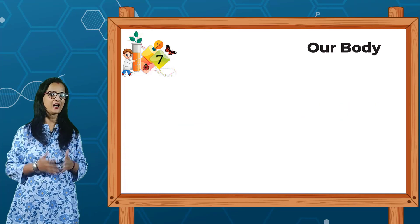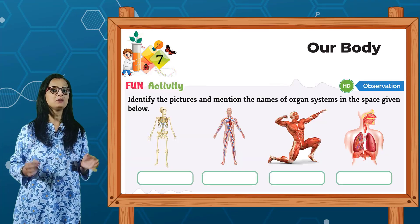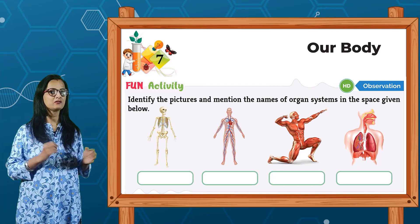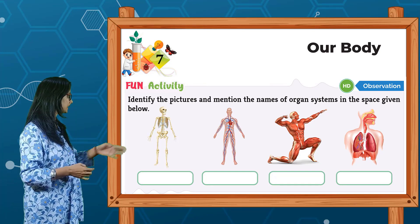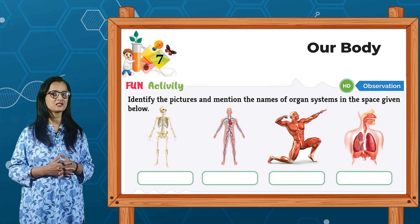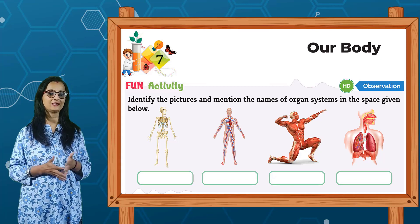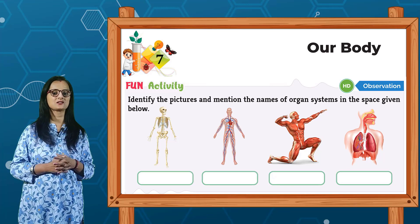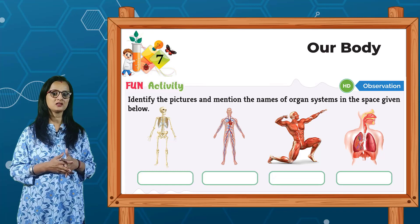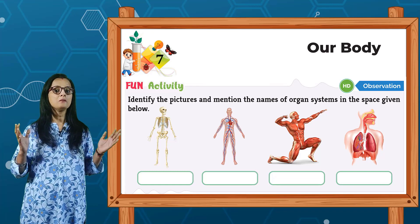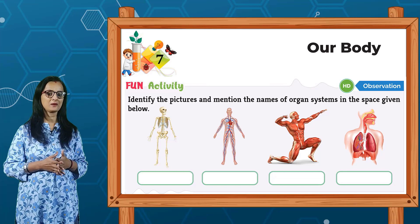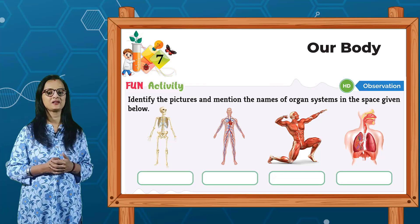Fun activity: identify the pictures and mention the name of the organ system in the space given below. The first is the skeletal system, second is the circulatory system, third is the muscular system, and last is the respiratory system.